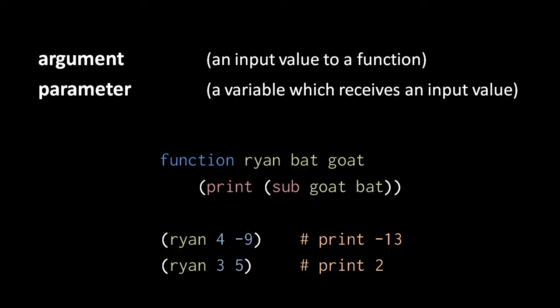In the second invocation of Ryan here, the argument 3 is passed to bat, and the argument 5 is passed to goat, so when we subtract bat from goat, we get 2. And so the function prints the value 2.